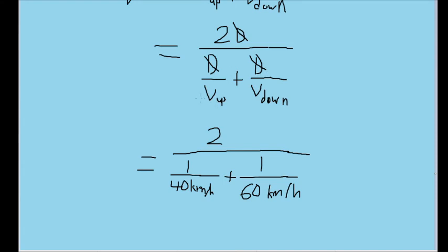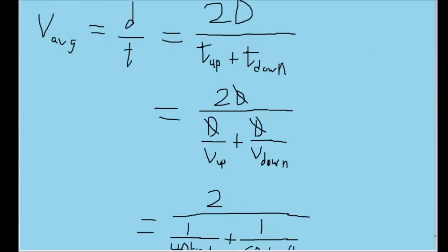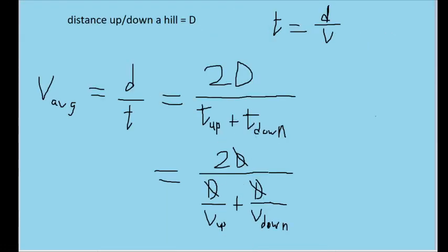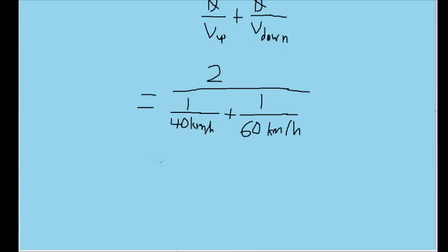And we are only left with variables that we have, as given to us by the problem—the speed of the car as it moves both up the hill and down the hill, as 40 kilometers per hour and 60 kilometers per hour. So I have substituted in those values into our new formula here. And plugging this into our calculators, we get an average speed of exactly 48 kilometers per hour, and that is our average speed for the entire round trip.